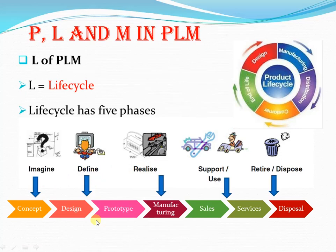The L means Life Cycle, and there are five different phases in the product life cycle. During the imagination phase, the product is just a concept — an idea. During the definition phase, ideas are converted into a detailed design and prototypes are manufactured. By the end of the realization phase, the product exists in final form through suitable manufacturing processes and can be used by the customer. During the use and support phase, the product is being used by the customer. Finally, the product is retired by the company and disposed of by the customer in a way that does not harm the environment.